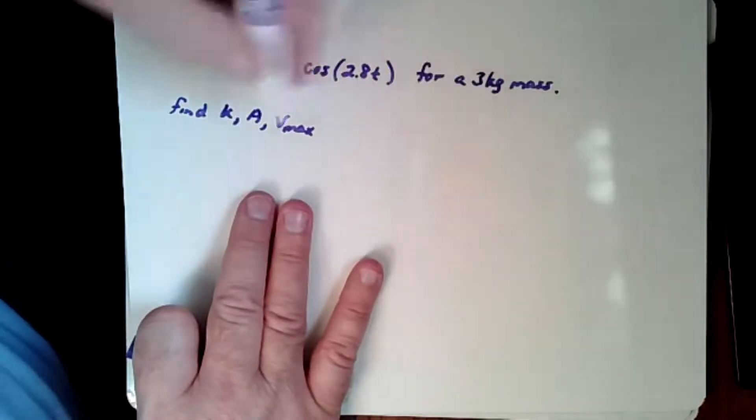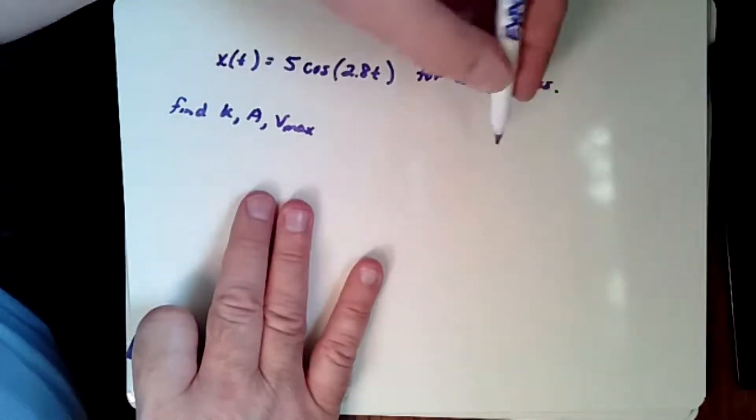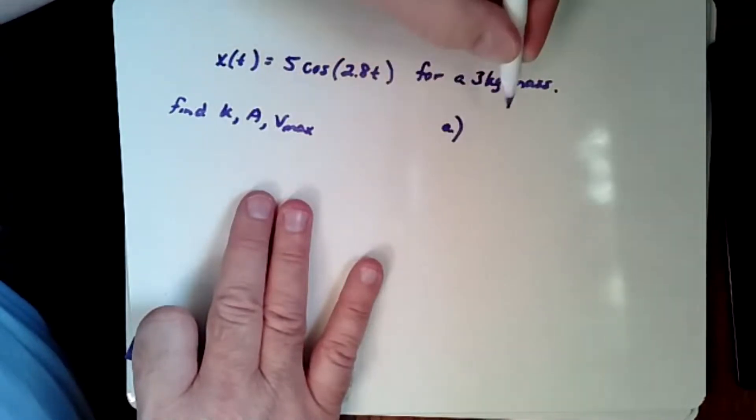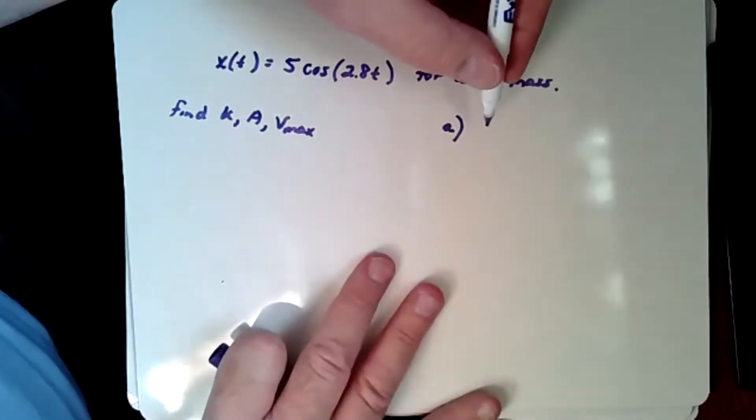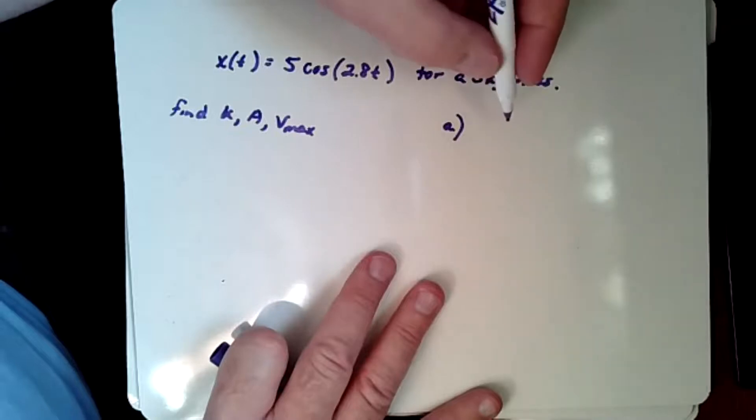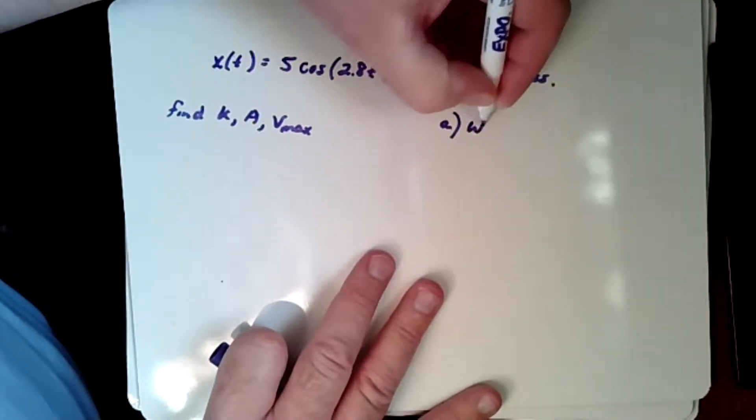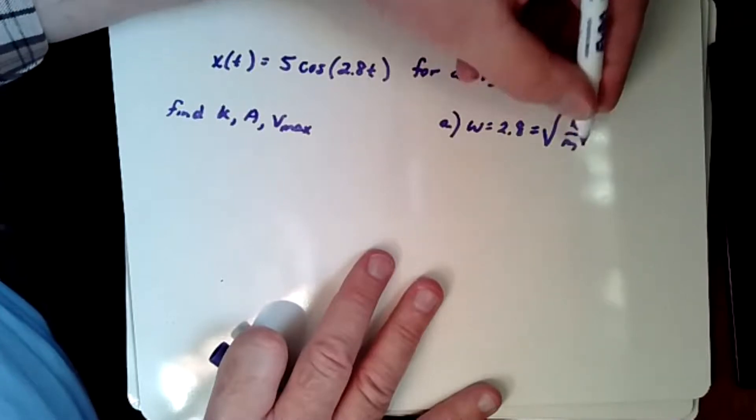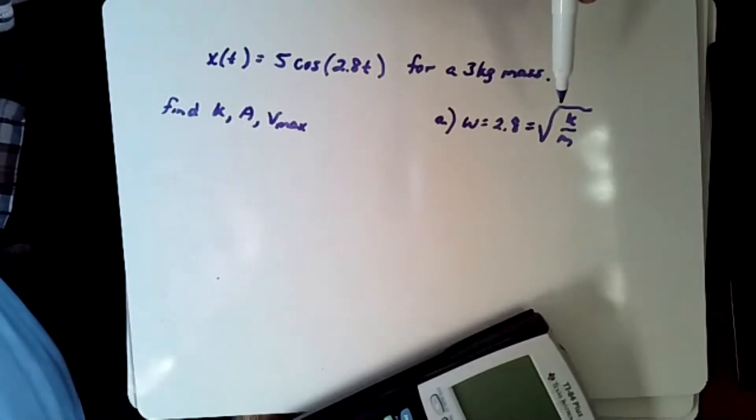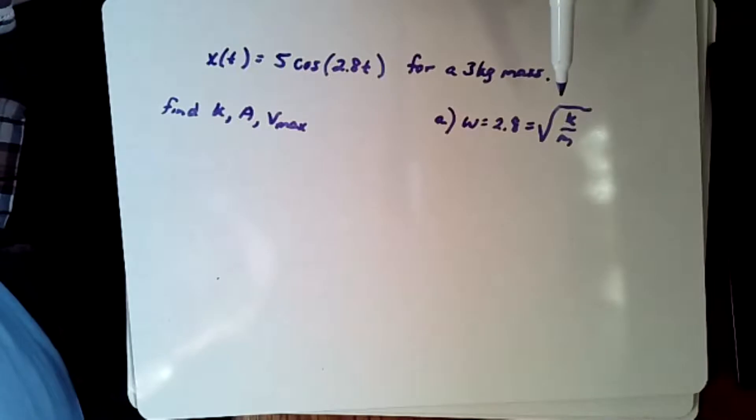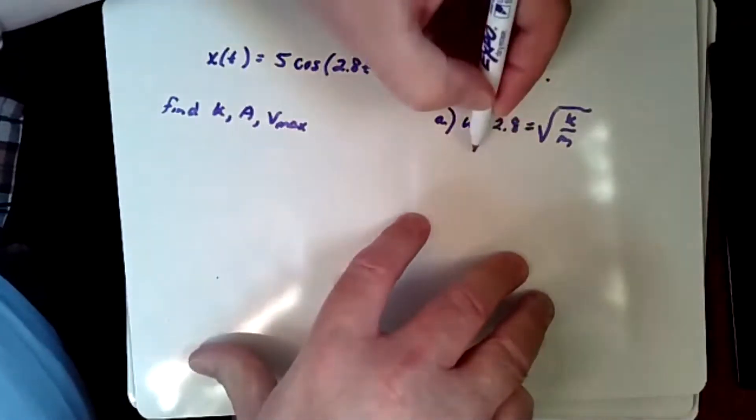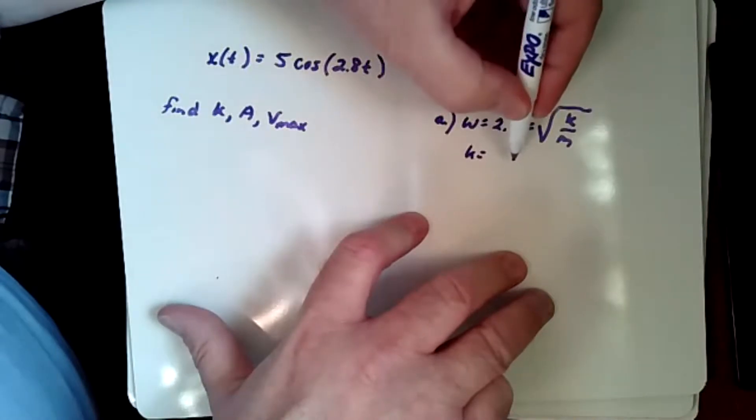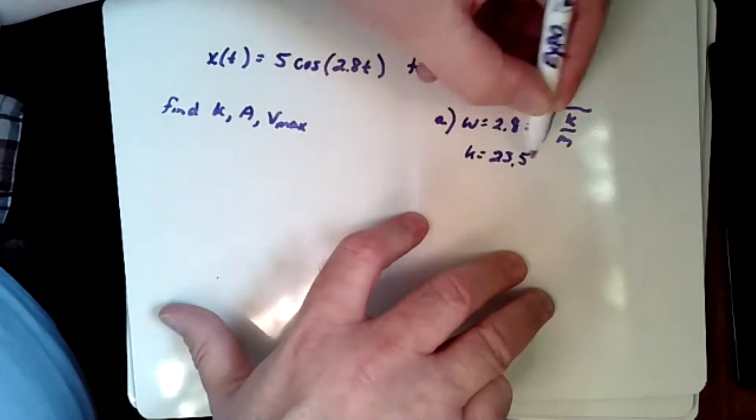So this time we're going to start off with an equation. And let's say the x is a function of time is going to be equal to 5 times the cosine of 2.8 t. And this is for a 3 kilogram mass. And the prompt may be something like this. Find k and amplitude and max velocity. That's a good question. Okay, well, if we're going to find k, then we need to start off here. I'm going to be a little unconventional and start over on this side because I'm a lefty and this whole whiteboard thing doesn't work really well for me when I'm writing it on a table. So anyway, here we go. We know that omega is equal to 2.8. And that's also equal to the square root of k over m. So we're going to square both sides and multiply both sides by the mass, which is 3. So this is pretty straightforward. And so I get 23.5 newtons per meter.